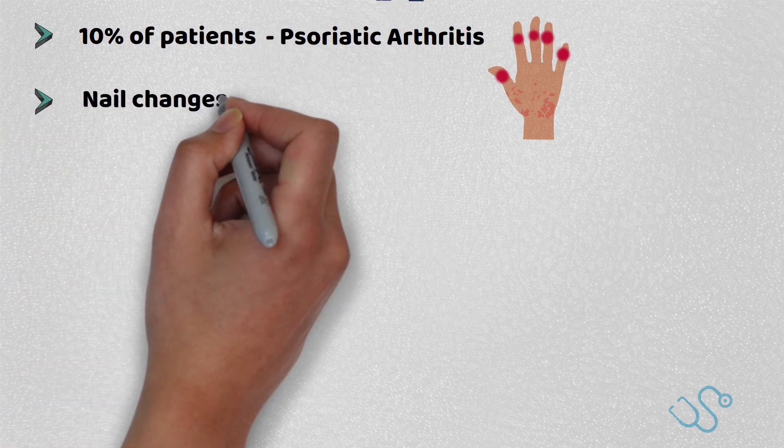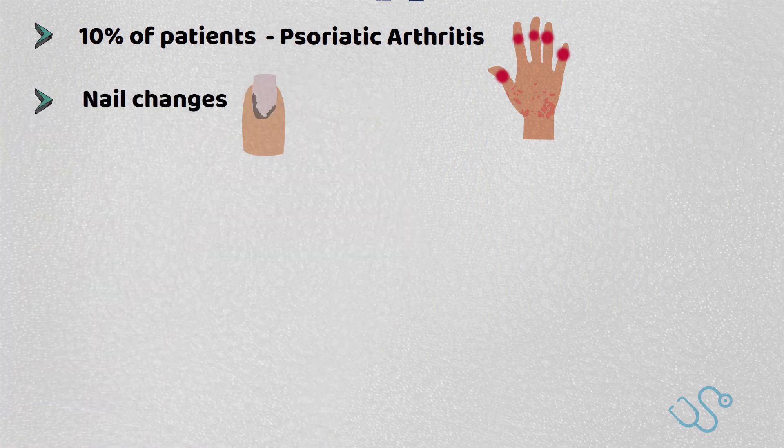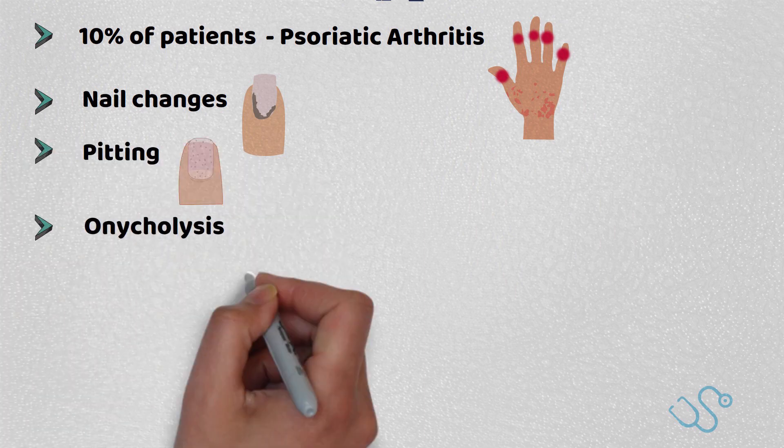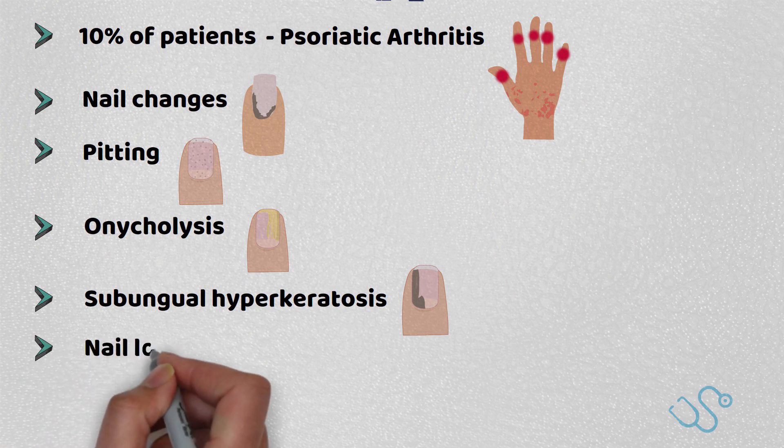Another feature is nail changes, which is more common in psoriatic arthritis patients, but with signs such as pitting, onycholysis, subungual hyperkeratosis, and nail loss being predominant features.